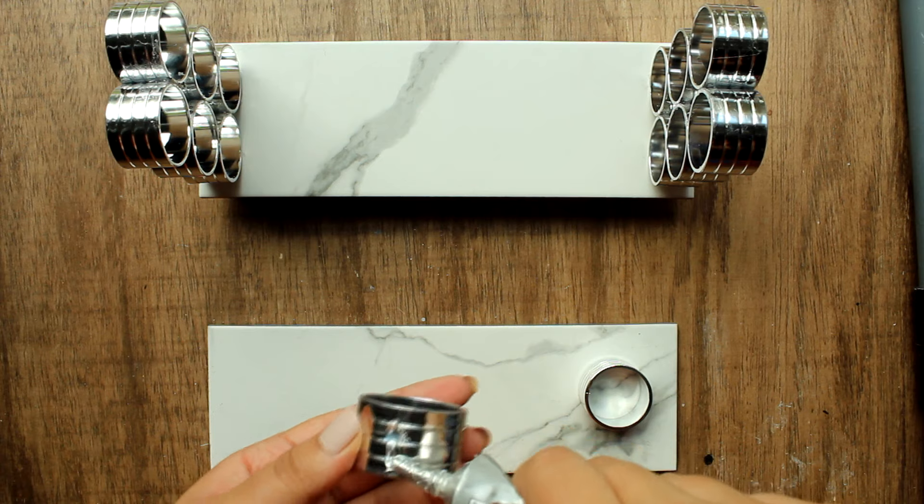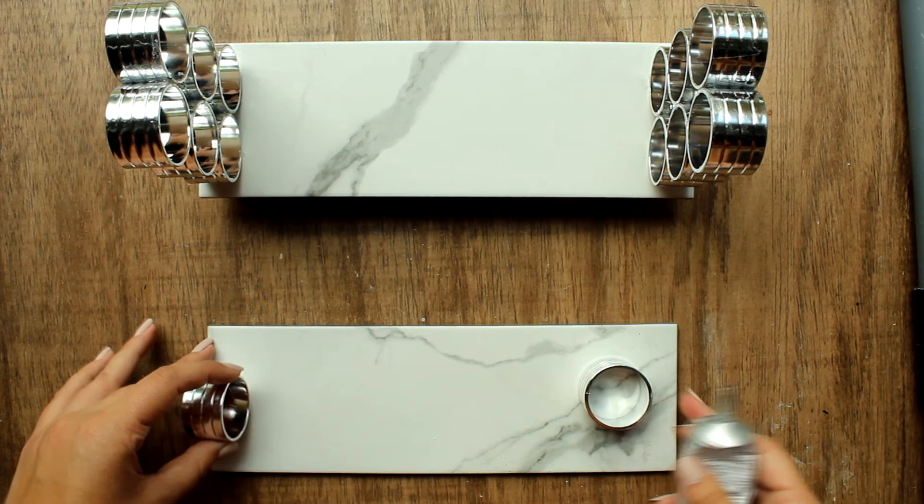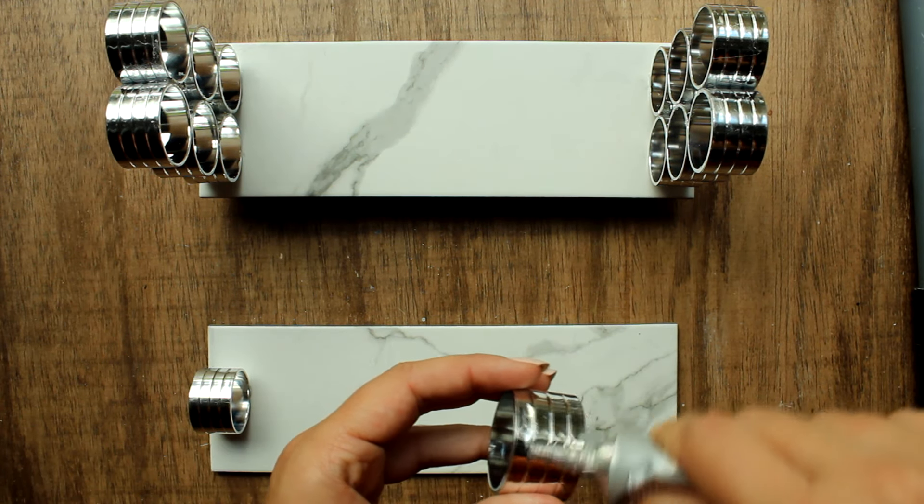While the side risers were drying, I went ahead and took the two remaining napkin rings and glued them to each side of the top of the top tile.